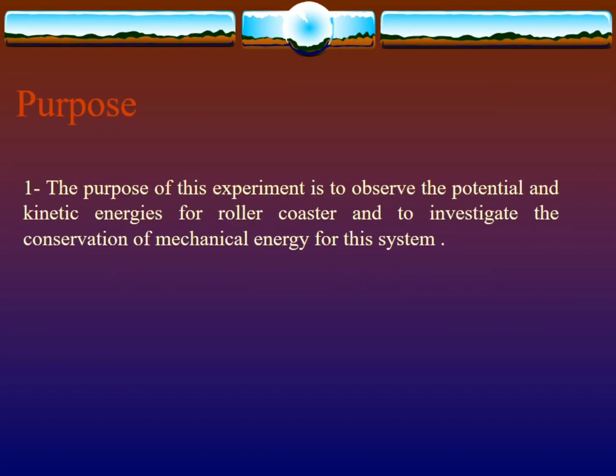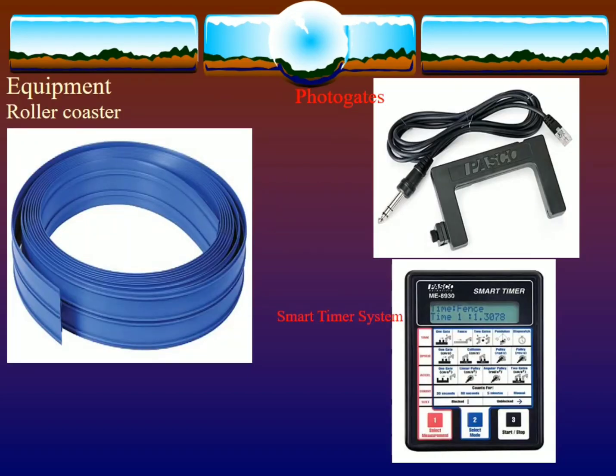The purpose of this experiment is to observe the potential and kinetic energies for a roller coaster and to investigate the conservation of mechanical energy for this system. The equipment includes a roller coaster, photo gates, and a smart timer system to measure the velocity of the car.